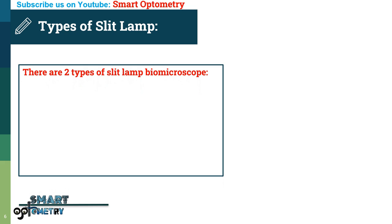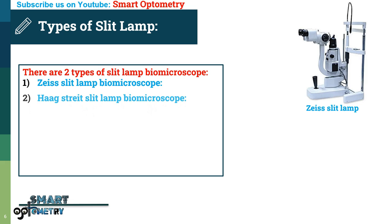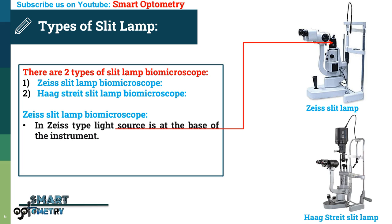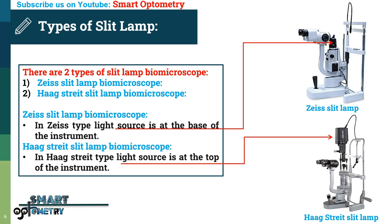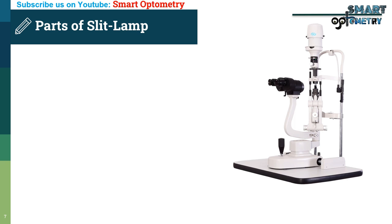Types of Slit Lamp: There are two types of slit lamp biomicroscope. One is the Javal slit lamp biomicroscope, and two is the Haag-Streit slit lamp biomicroscope. In the Javal type, the light source is at the base of the instrument. In the Haag-Streit type, the light source is at the top of the instrument.